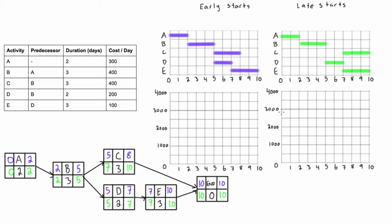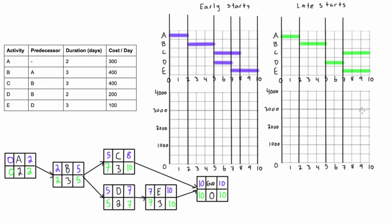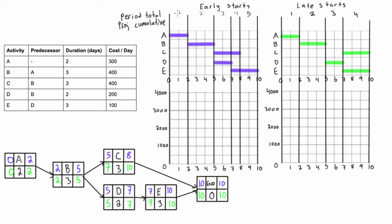Now we need to break these up into periods. Periods start and finish at any time that an activity starts and finishes. For early starts we'll have periods one through five, and for late starts we'll have periods one through four. We'll record the period total and project cumulative. In period one we only have activity A, which costs $300 per day, and we have 2 days, so the period total is $600 and the project cumulative is also $600.